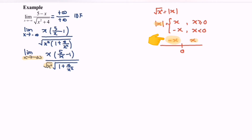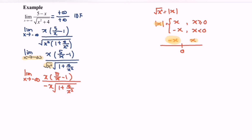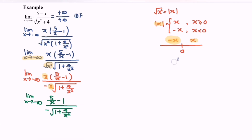So the limit when x approaches negative infinity becomes x times (5 over x minus 1) over negative x times the square root of (1 plus 4 over x squared). Simplifying the common terms, we will have the limit when x approaches negative infinity of (5 over x minus 1) over negative 1 times the square root of (1 plus 4 over x squared).